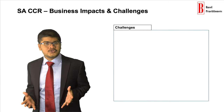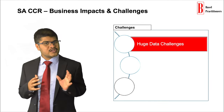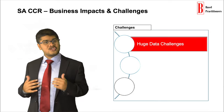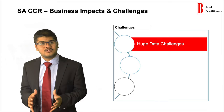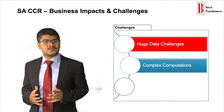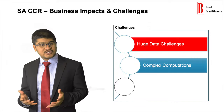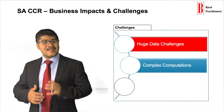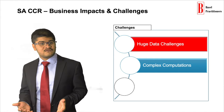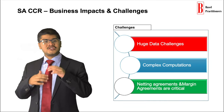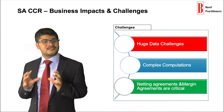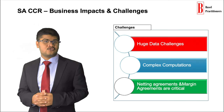The implementation challenges are quite huge. As understood from the computations, the data requirements are quite large. We need information at different granularities, including a lot of information around margin, unmargined transactions, initial margins, variation margins, and many more attributes to be captured at the transaction level. The computations are hugely complex. We need to do computations at different levels of granularity: transaction level, hedging set level, asset class level, and netting agreement level. Multiple factors like supervisory factors, supervisory deltas, and supervisory correlation factors need to be computed. Computation happens at the margin agreement level, so accordingly we need to create netting agreement groups, subnetting agreement groups, or super netting agreement groups if required.